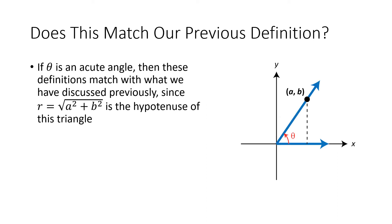For the second question — does this match our previous definition? It turns out that it does, because if I pick the point (a, b), then the horizontal distance is the x-coordinate, the vertical distance is the y-coordinate, and the hypotenuse is the distance from (0, 0) to (a, b). So SOHCAHTOA — opposite over hypotenuse and all of that — does apply when the angle is acute. All of this matches up with the definitions we already had.